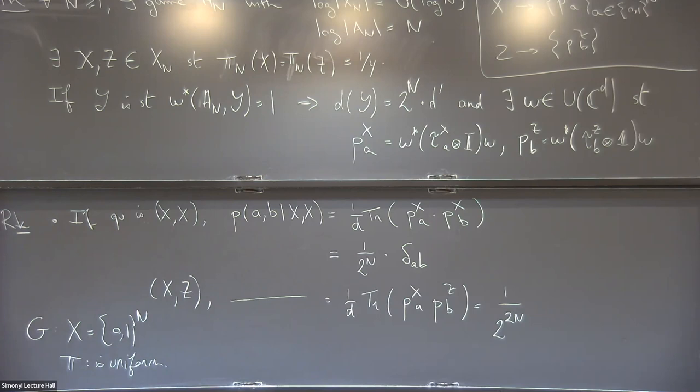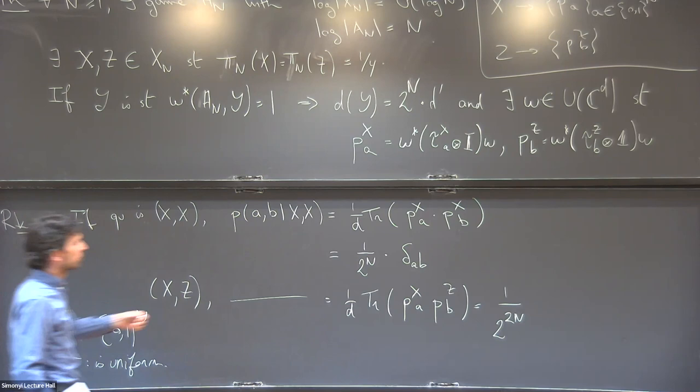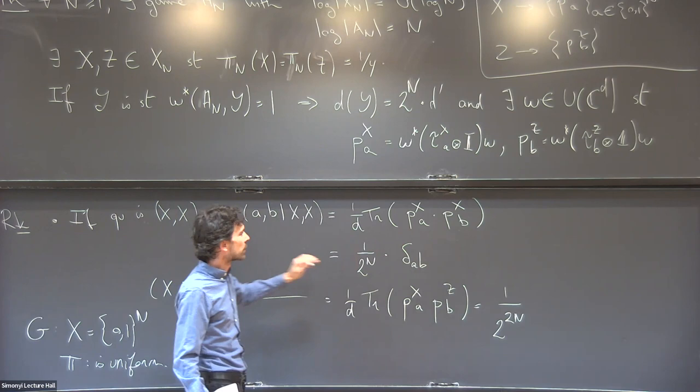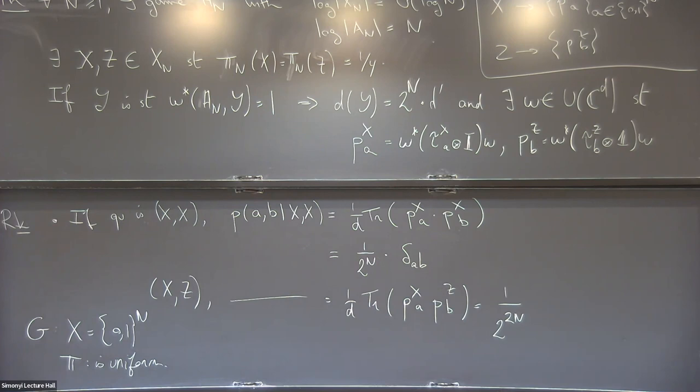The modification to H_N is: whenever the question pair is X and Z — because the distribution is uniform, we use X and Z — we ask the player not only to report their answer but to also interpret that answer as a question in G and give the answer they would give in G. So we tell them: if your questions were X and Z, generate an answer as in H_N, but also think of that answer as a question in G and give me the answer you would give in G. Then we check these answers as in G.